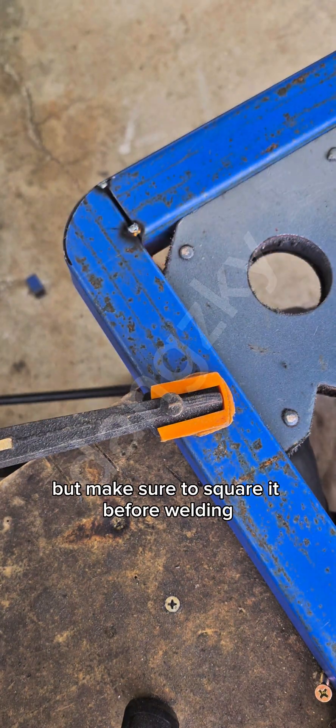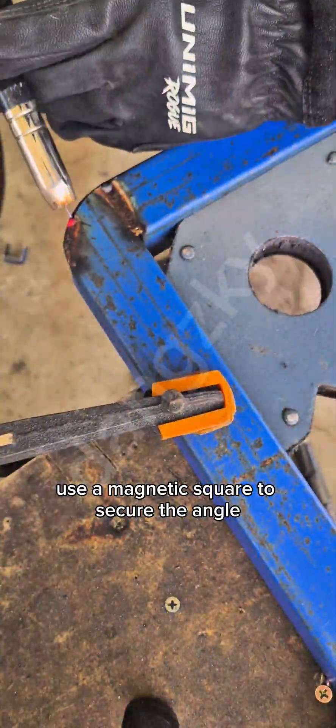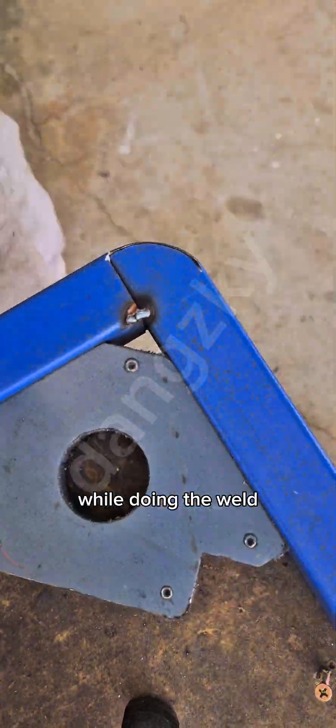Now start welding, but make sure to square it before welding. Use a magnetic square to secure the angle while doing the weld.